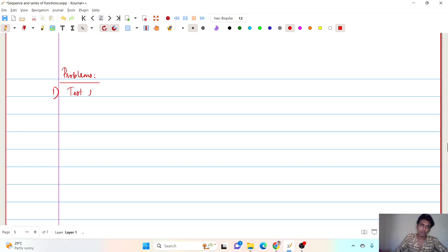Now, we are about to test the uniform convergence of fn(x) where our fn(x) is nx upon 1 plus n square x square for all x in the set of real numbers.